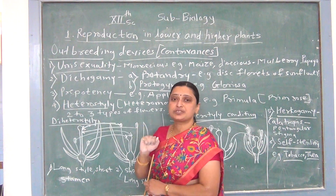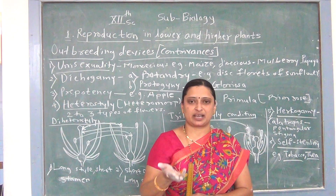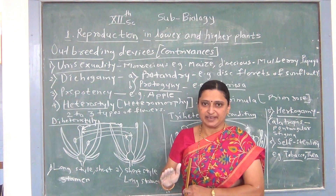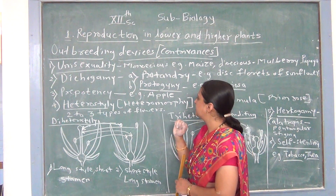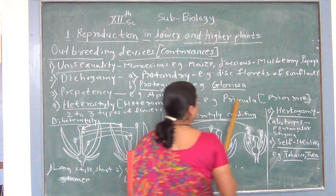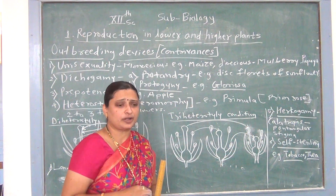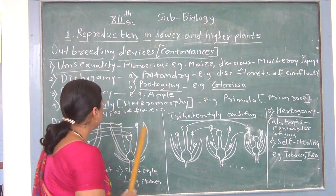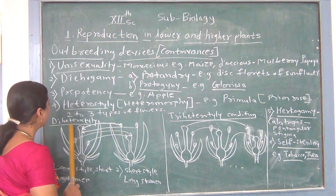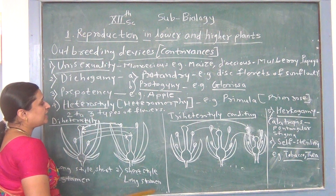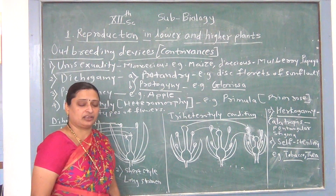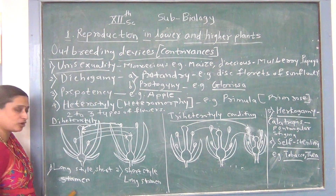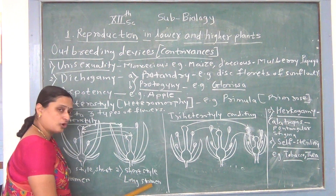The fourth device is called heterostyly. Hetero means different and style refers to the style of the pistil. The pistil is divided into three parts: stigma, style, and ovary. Heterostyly depends upon the length of the style and is also called heteromorphic. Heterostyly is clearly seen in the plant Primula or primrose. In Primula, di-heterostyly and tri-heterostyly conditions are easily observed. In di-heterostyly, one flower has a long style with short stamens, and another flower has a short style with long stamens.